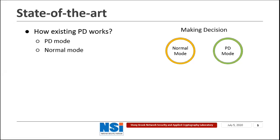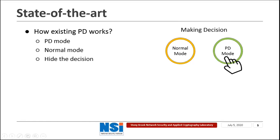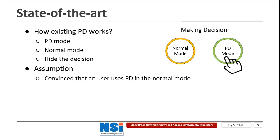A user who uses a PD scheme makes a choice about which mode to use. When he chooses the normal mode, he is allowed to store public data in the storage device. While choosing the PD mode, he is allowed to store both public data and hidden data. A PD scheme helps the user hide which mode he is using, so the adversary cannot know whether the user has stored any hidden data in the storage device or not.